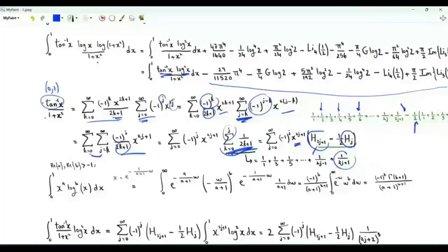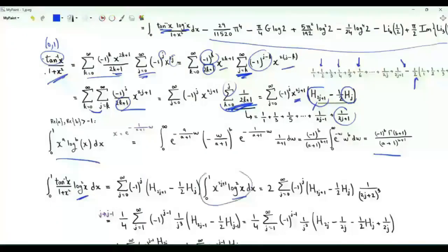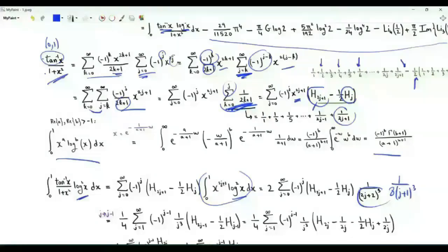Whenever we have logarithmic integrals or harmonic sums we need the formula: integral from 0 to 1 of x^a (log x)^b equals (−1)^b Γ(b+1)/(a+1)^{b+1}. Multiplying both sides of our series by (log x)² and integrating from 0 to 1 term by term, each term gives (−1)² = 1 times Γ(3) = 2, divided by (2j+2)³. This simplifies to 1/(8(j+1)³).